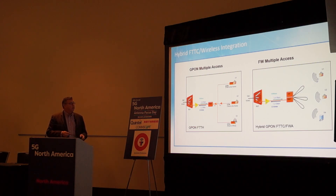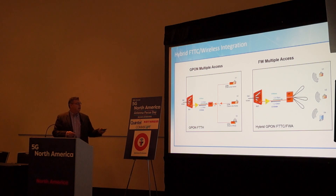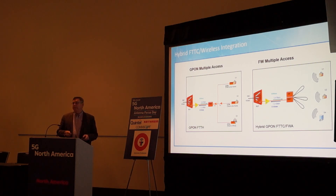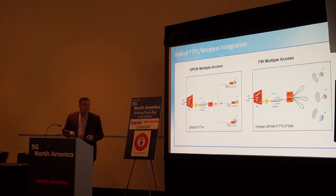For fixed wireless access, you replace this with a millimeter wave system. That would go out to your fiber distribution hub, maybe picking up 64 homes on a tower or light post, with probably four millimeter wave units, going from home to home.